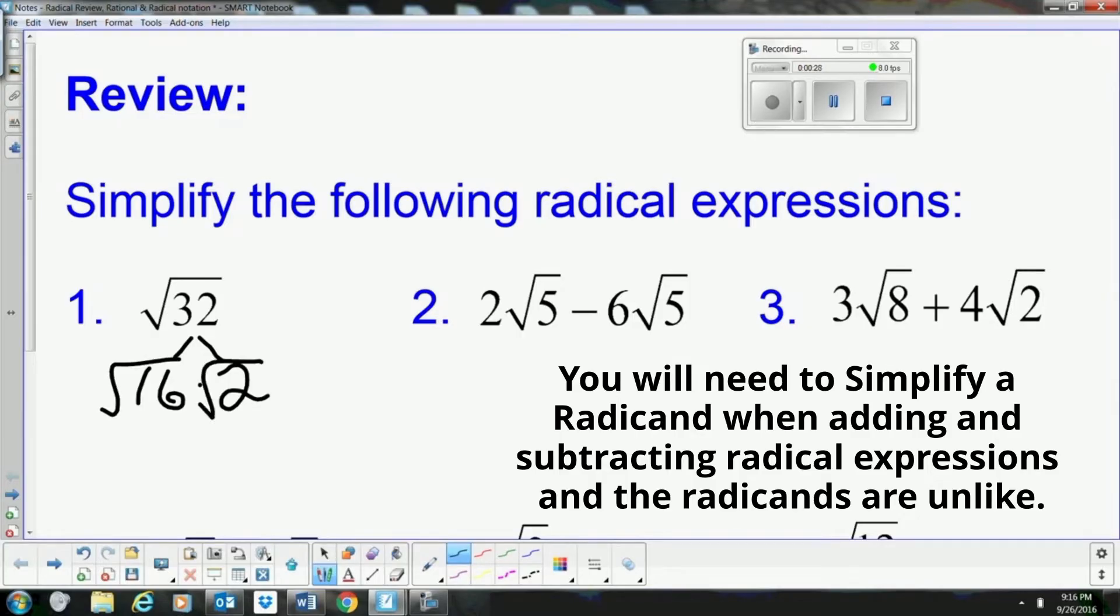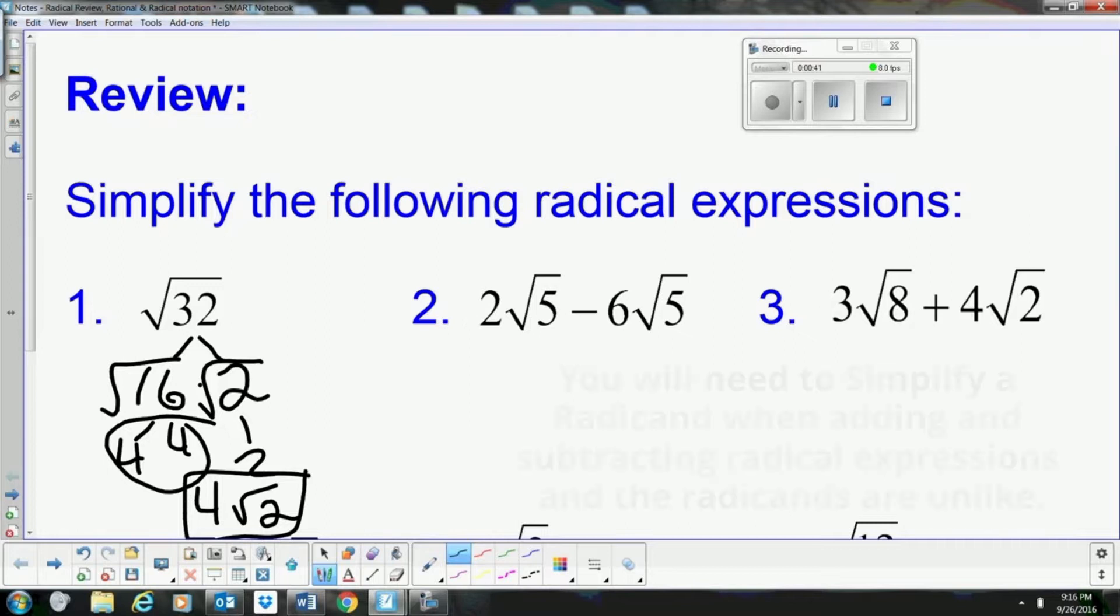We know the square root of 16 is 4 times 4, so we're going to pull out that pair and it's going to become 4 square root of 2. That's how the square root of 32 simplifies as a simplified radical.